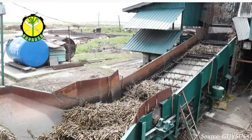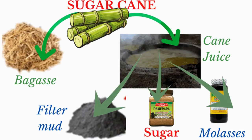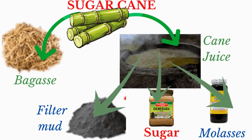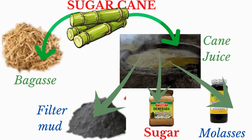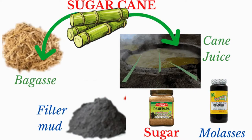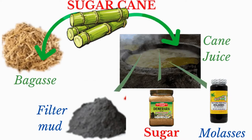At the mill, the bundled cane in each punt is lifted and released to the cane carrier for processing to begin. Processing involves the extraction of the cane juice from the fibrous residue or bagasse of the cane plant. Since the juice contains impurities known as filter mud, these impurities must be removed before the juice is crystallized to form the sugar. Molasses is one of the byproducts of the refining process and may be further refined in some cases to produce ethanol.